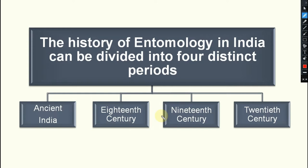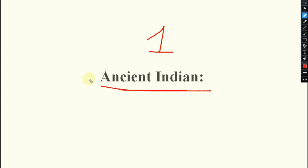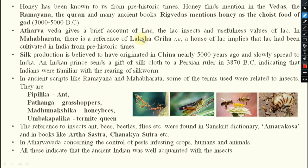The history of entomology in India can be divided into four distinct periods: first is Ancient India, second is the 18th century, third is the 19th century, and fourth is the 20th century. We will discuss each one by one, starting with Ancient India.